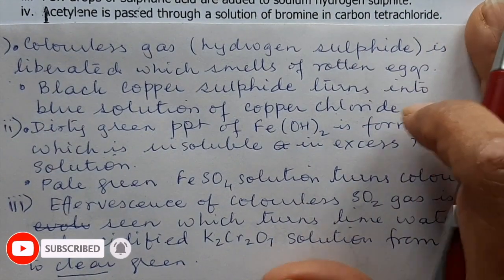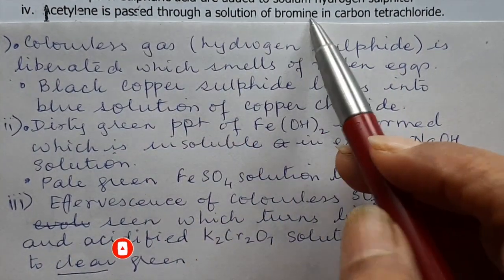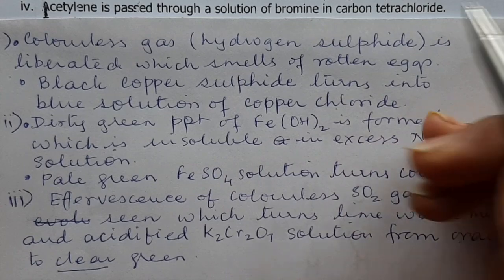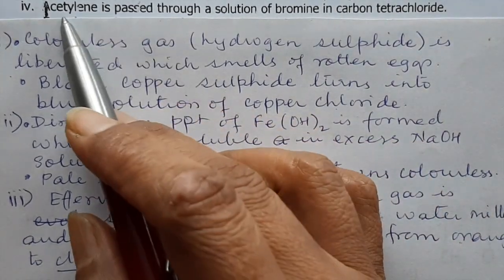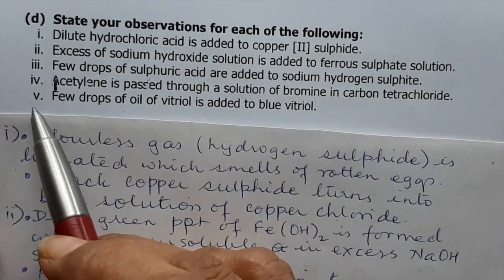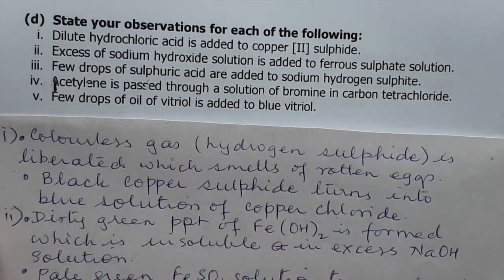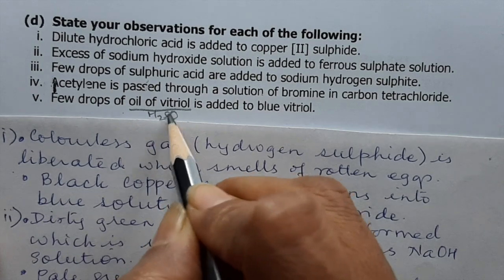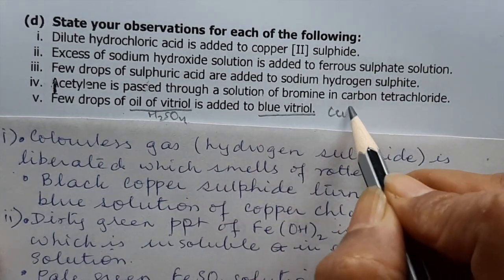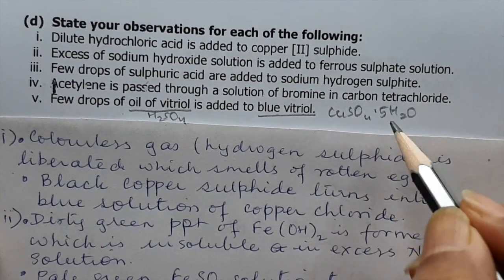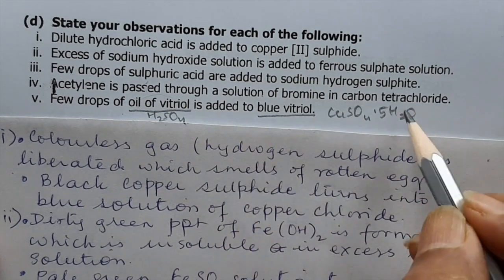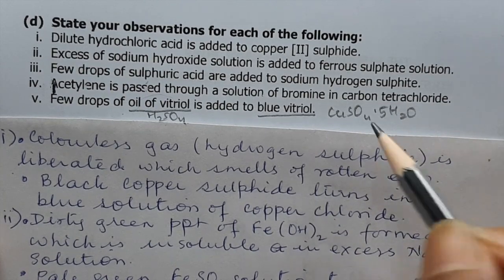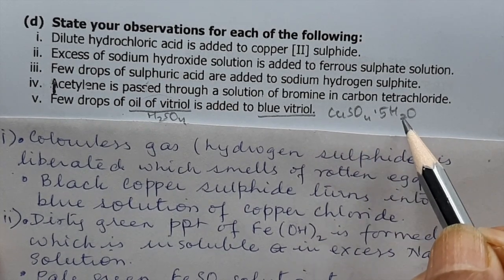(iv) Acetylene is passed through a solution of bromine in carbon tetrachloride: the reddish-brown colour of bromine in CCl₄ will be discharged because acetylene is unsaturated. (v) A few drops of oil of vitriol (concentrated H₂SO₄) are added to blue vitriol (CuSO₄·5H₂O): the concentrated H₂SO₄ removes the water of crystallisation, so blue hydrated copper sulfate crystals turn into amorphous white anhydrous copper sulfate.